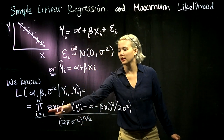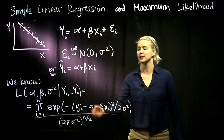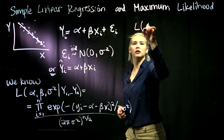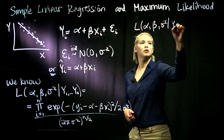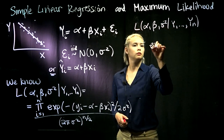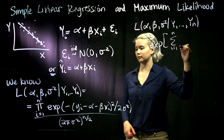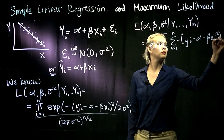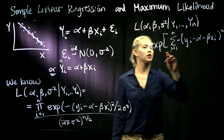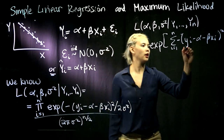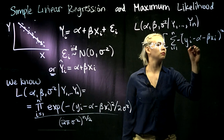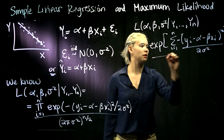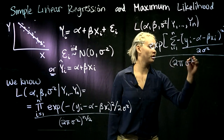So if we have the product of e to the something, that's the same thing as e to the sum of whatever stuff we have. Let's keep rewriting this likelihood. We've got this so far and then we still need to divide by 2 sigma squared, and then we have this whole thing divided by 2 pi sigma squared to the n over 2.